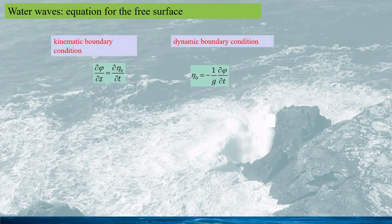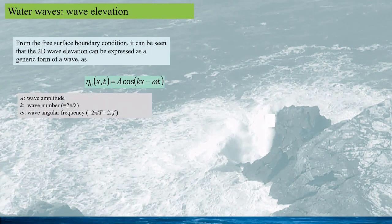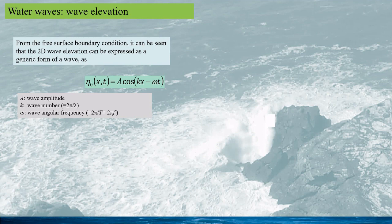Combining the kinematic and dynamic boundary conditions together, we obtain an equation for the free surface. From the form of this equation, it is a typical wave equation. Because the equation for the free surface is a wave equation, we can assume the 2D wave elevation has the form: eta equals A times cos(kx minus omega*t), where A is the wave amplitude, k is the wave number defined as 2*pi divided by the wavelength, and omega is the wave circular frequency.